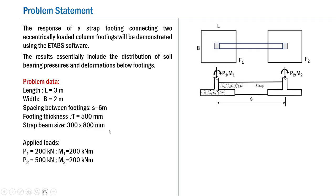The applied column loads are: for the first footing, an axial load of 200 kN and a moment of 200 kNm; for the second footing, the axial load is 1000 kN but the moment is kept the same at 200 kNm. This represents a strap beam footing provided below a braced bay where one footing is under lower compression and the second under higher compression, with both subjected to the same horizontal load and hence the same moment.